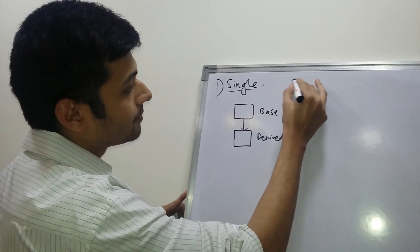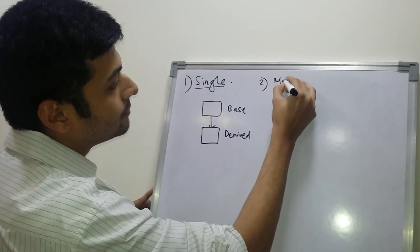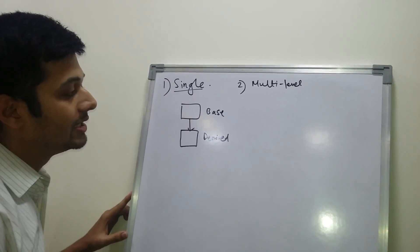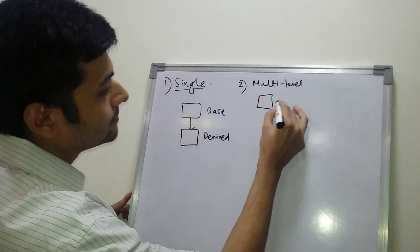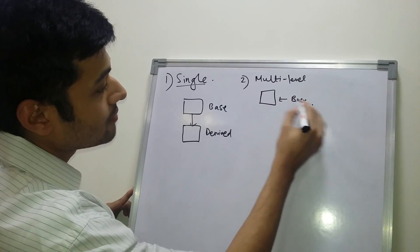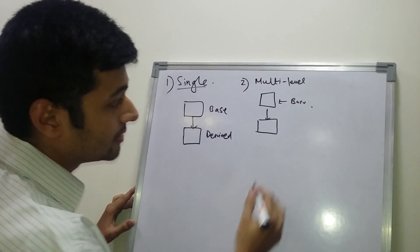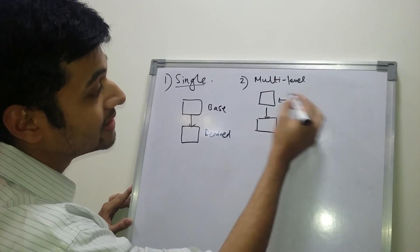The second one is multi-level. In multi-level, there is one base class. There is a derived class which has inherited properties from this base class.